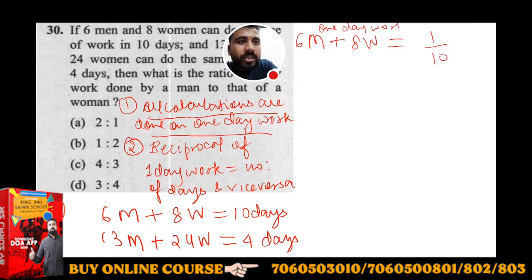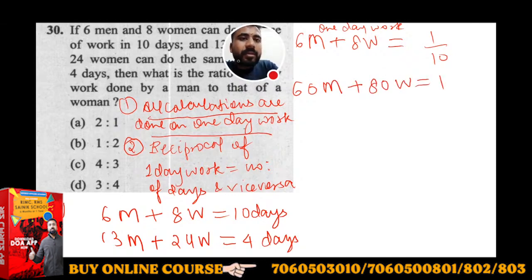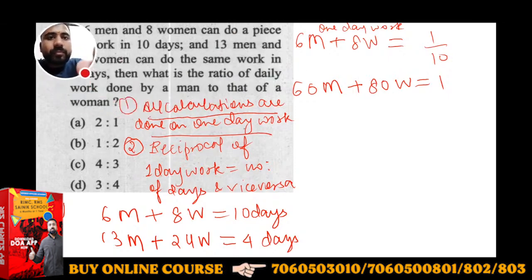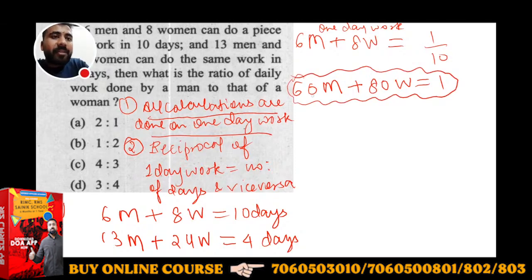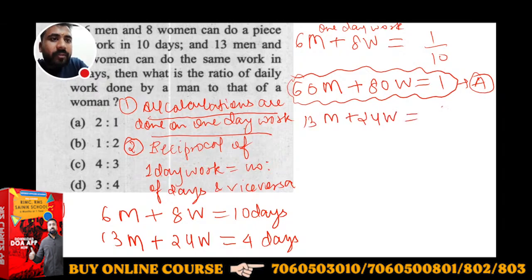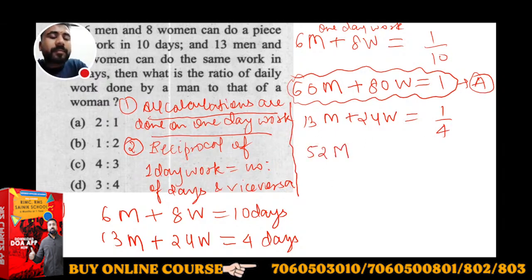अब इसको cross multiply करते हैं। पहली equation: 60M + 80W = 1 — यह Equation A है। दूसरी condition के लिए: 13 × 4 = 52 men, 24 × 4 = 96 women, तो 52M + 96W = 1 — यह Equation B है।